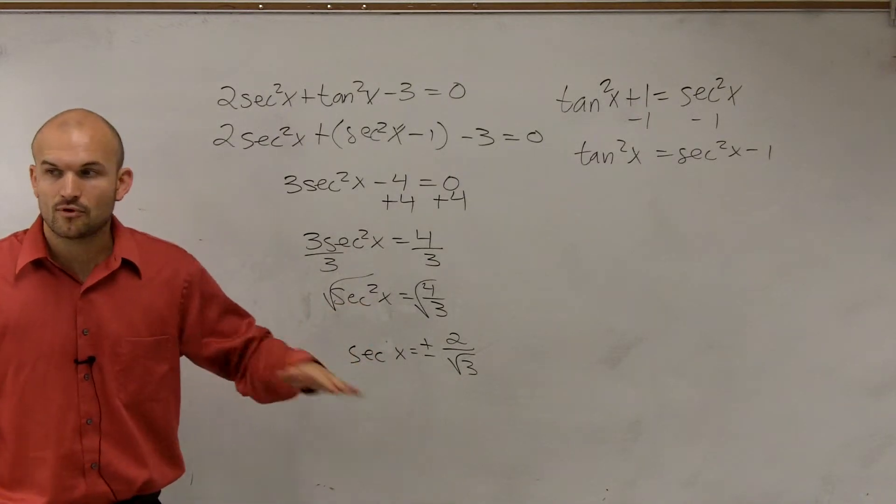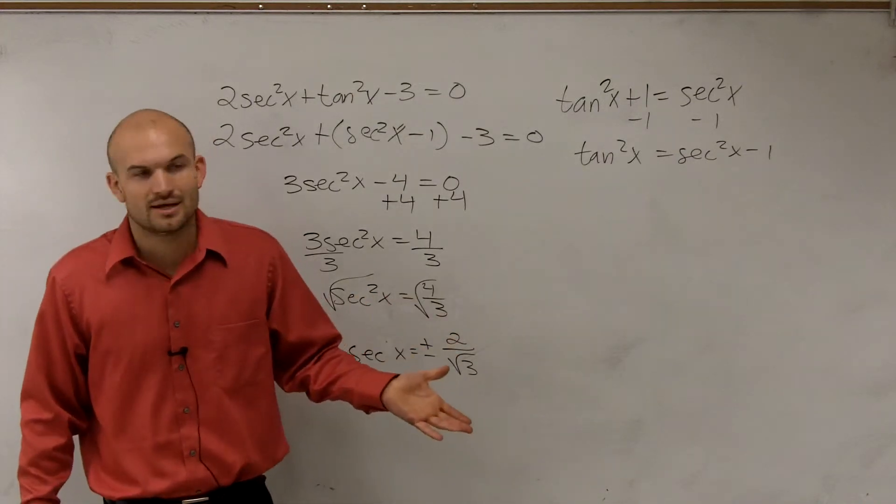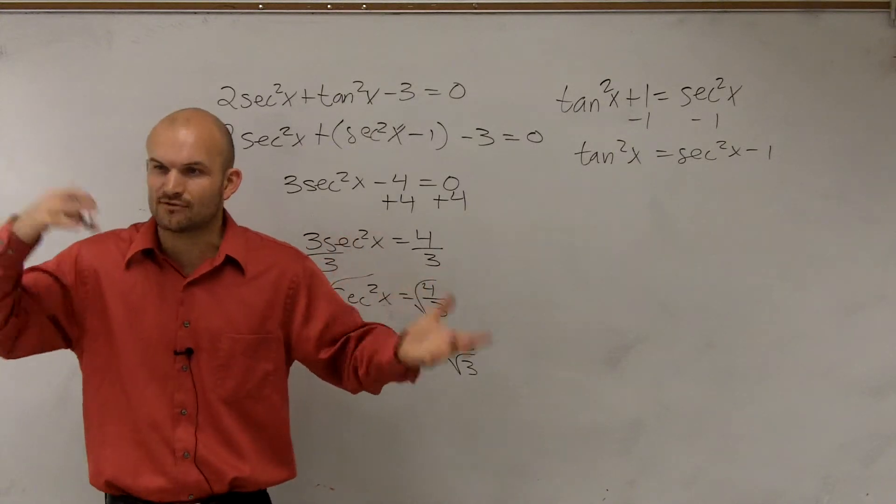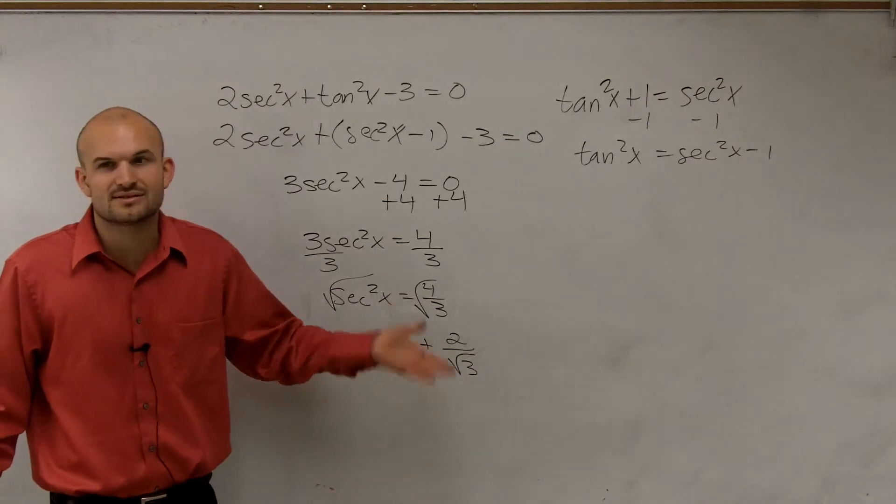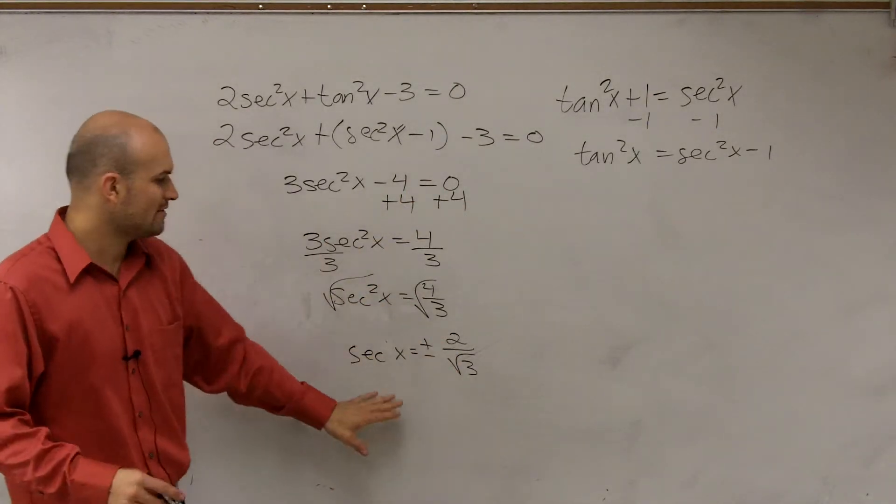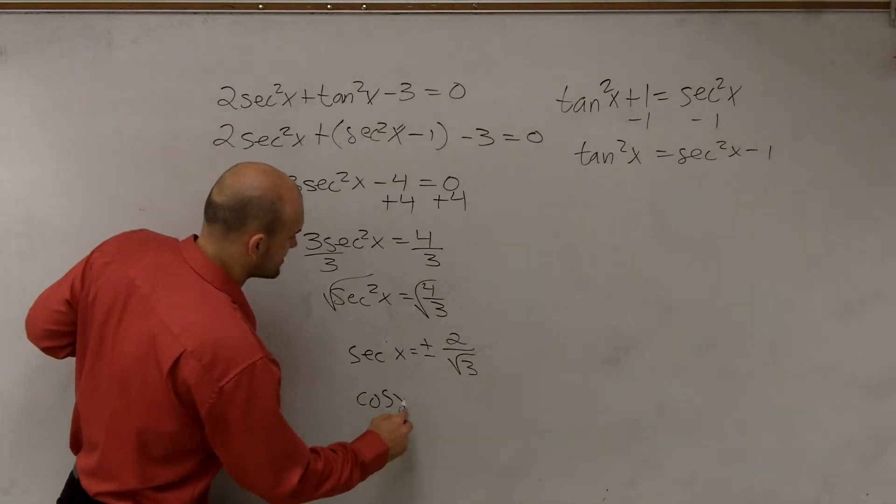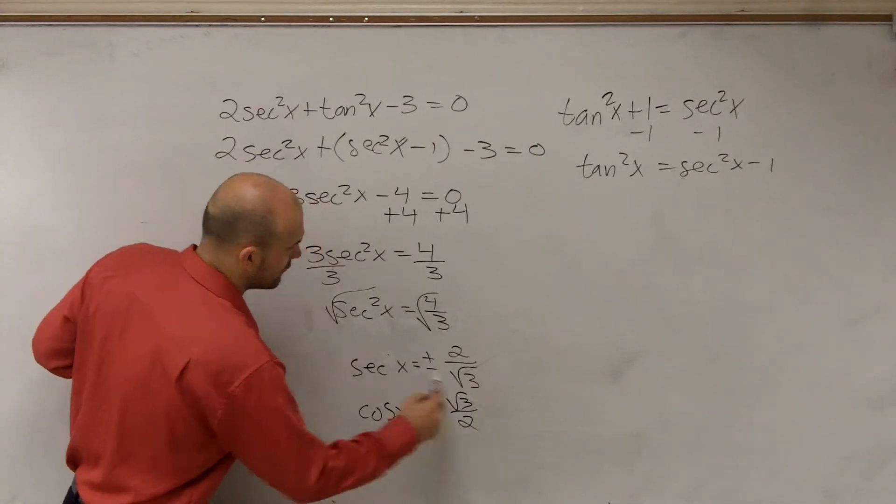OK, now before rationalizing the denominator, the reason why I didn't want to use secant and I wanted to use tangent is because tangent I can represent on the unit circle as y over x. Sometimes it's a little bit harder representing cosine because that's now going to be 1 over x. However, if I recognize that this is secant, I know the reciprocal, which will be cosine of x, is going to equal plus or minus the square root of 3 over 2.